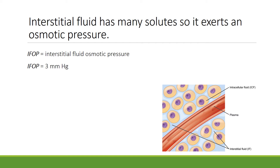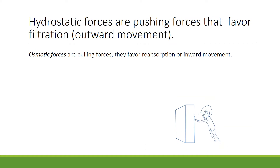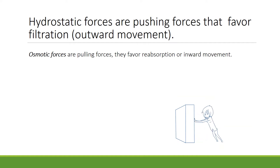There is another pressure to consider when looking at the interstitial fluid: osmotic pressure, or interstitial fluid osmotic pressure. A typical value for IFOP is 3 mmHg. Because blood has more solutes than interstitial fluid, it has a greater osmotic pressure. A typical BOP is 25 mmHg, compared to a typical value of 3 for IFOP.